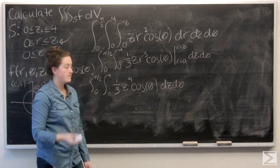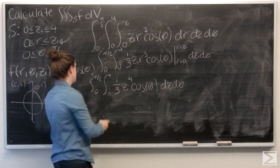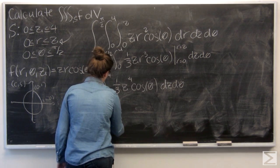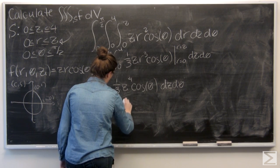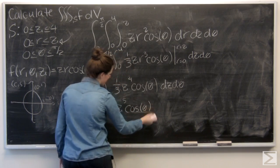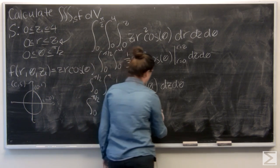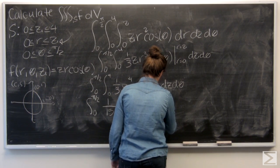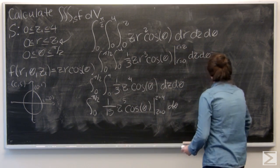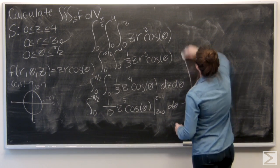Now I'm ready to integrate with respect to z. I'm looking at z to the fourth here, and the integral of that is going to be one-fifth z to the fifth. And I want to evaluate that from z equals 0 to z equals 4. Let's take that up here to evaluate it.